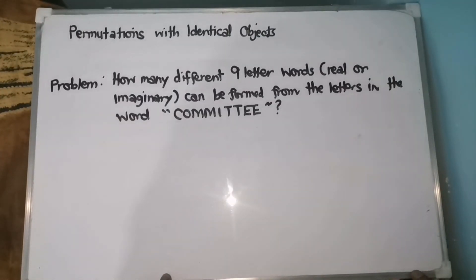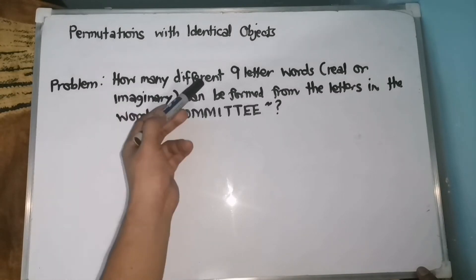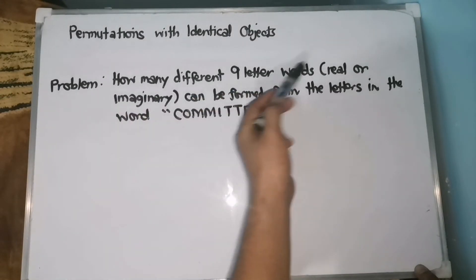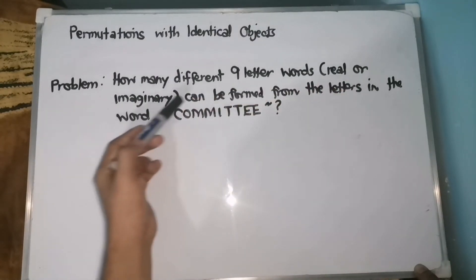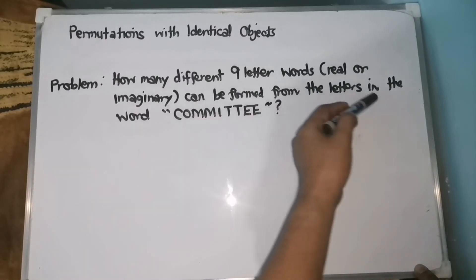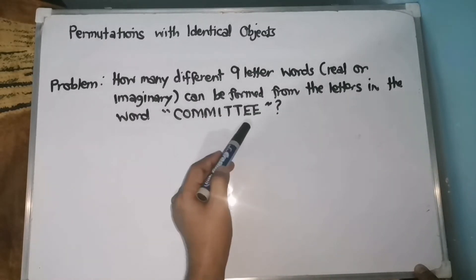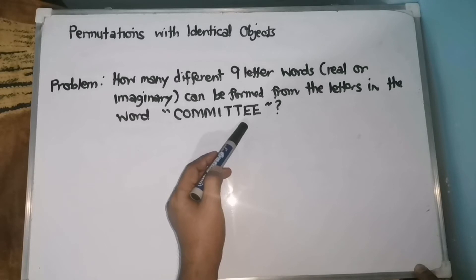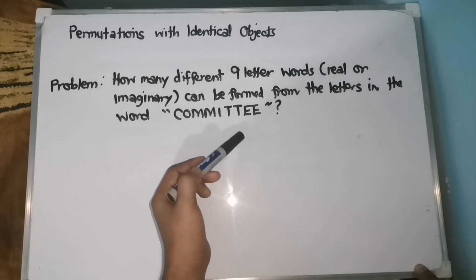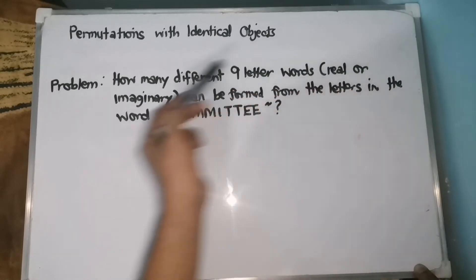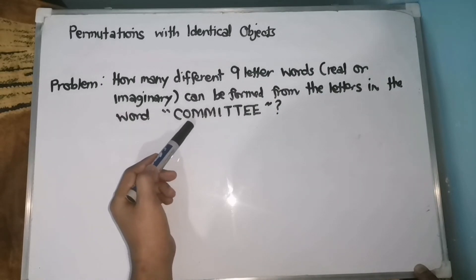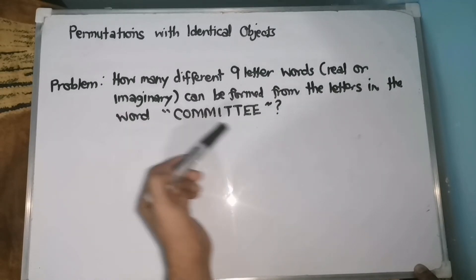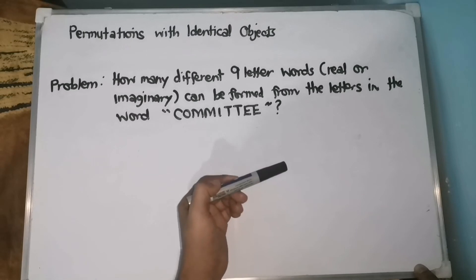Let's have another problem under permutations with identical objects. How many different 9-letter words, real or imaginary, can be formed from the letters in the word 'committee'? Again, yung word natin — nagagawa ng 9-letter words, it's either real or imaginary — is the word committee. Notice that we have here identical objects.